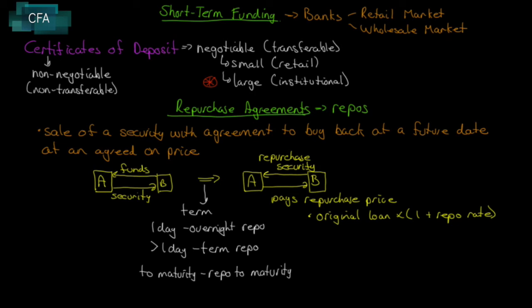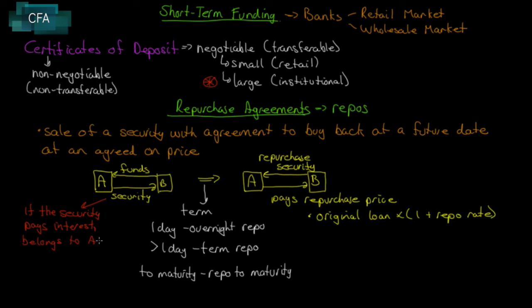While B is holding the security, if the security pays interest, that interest belongs to A. For example, if a security pays 2% but the repo rate is only 1%, you'd want to buy as many of those 2% securities as possible and enter into repurchase agreements to maturity, letting somebody else hold the security while you collect the interest and make the spread.